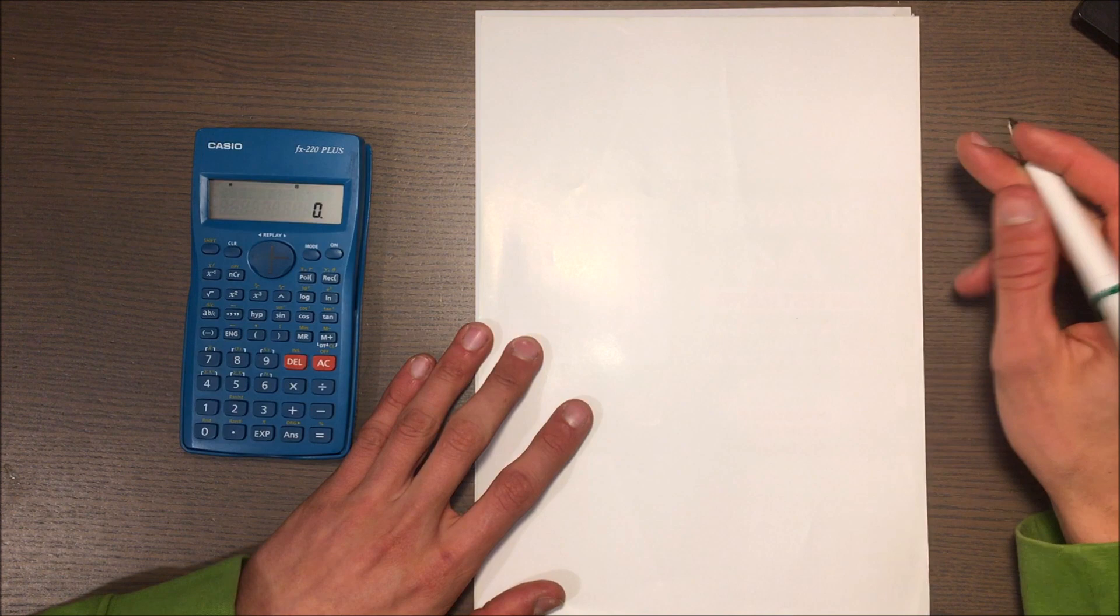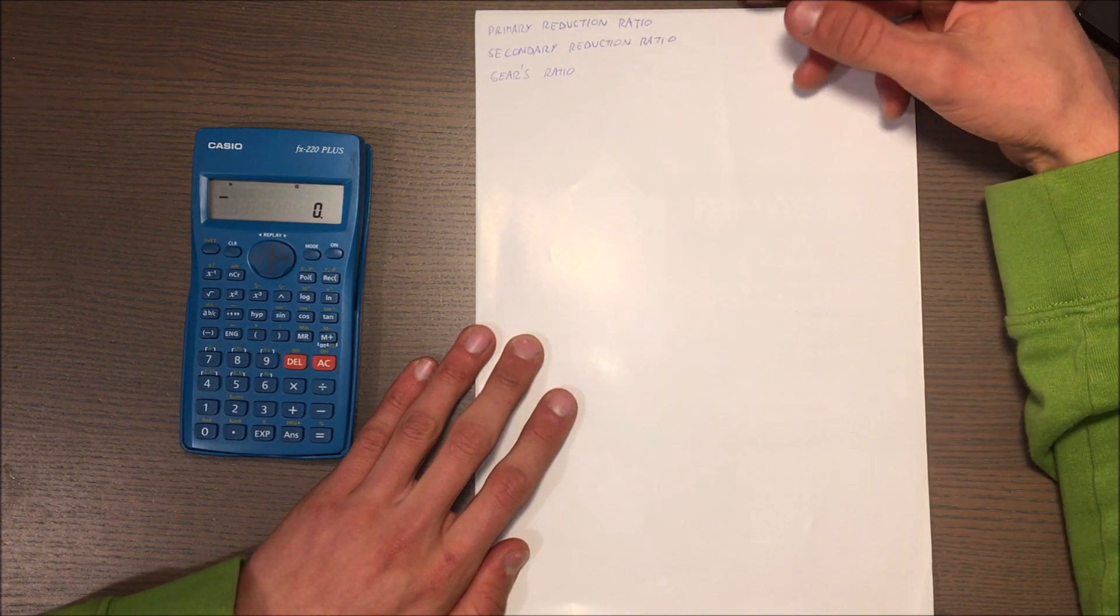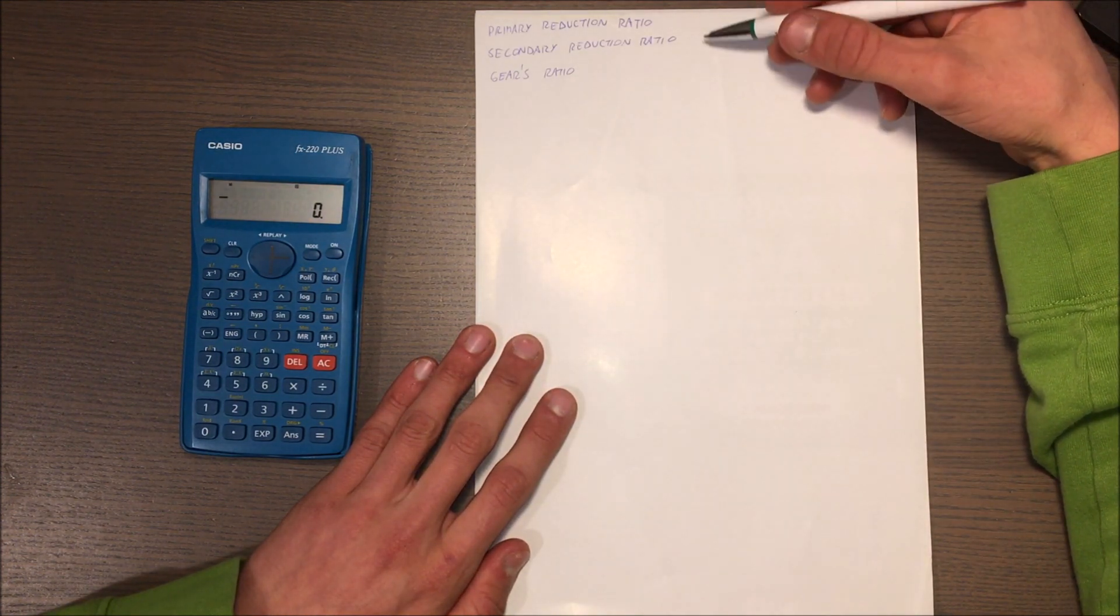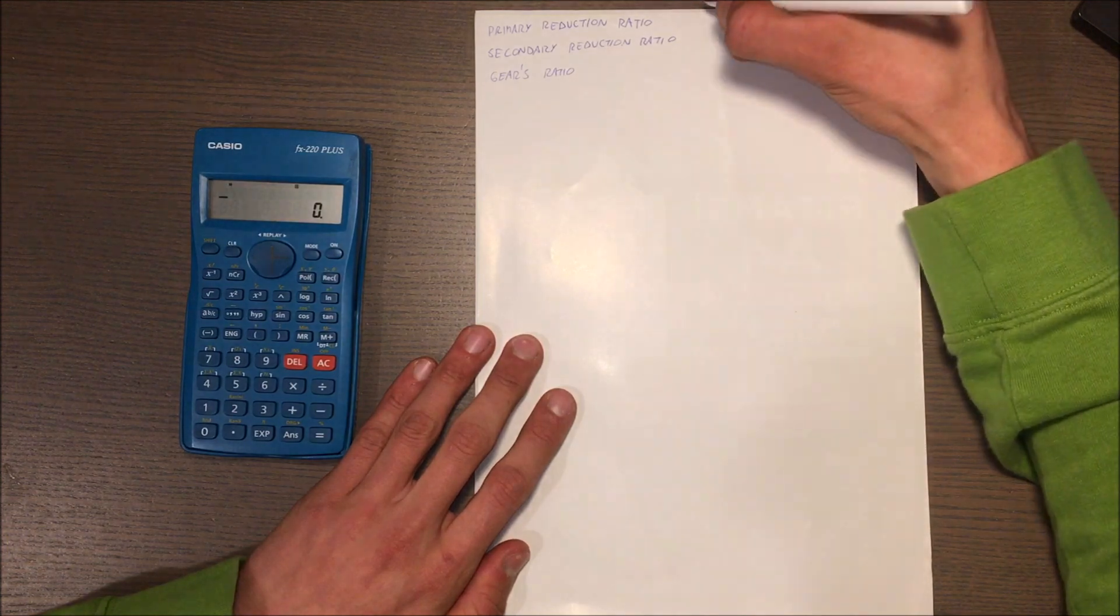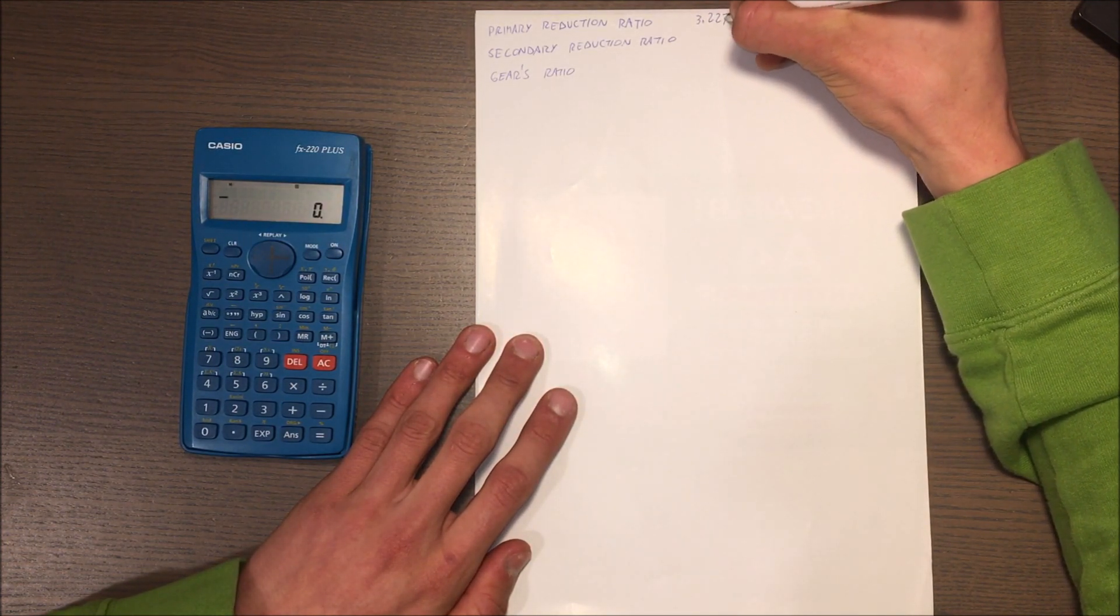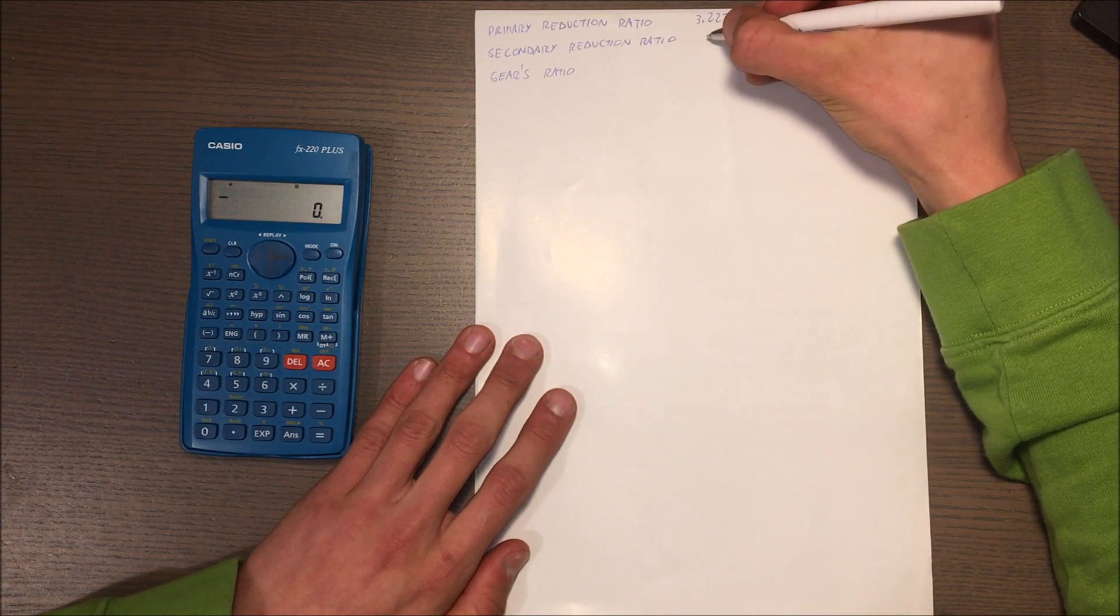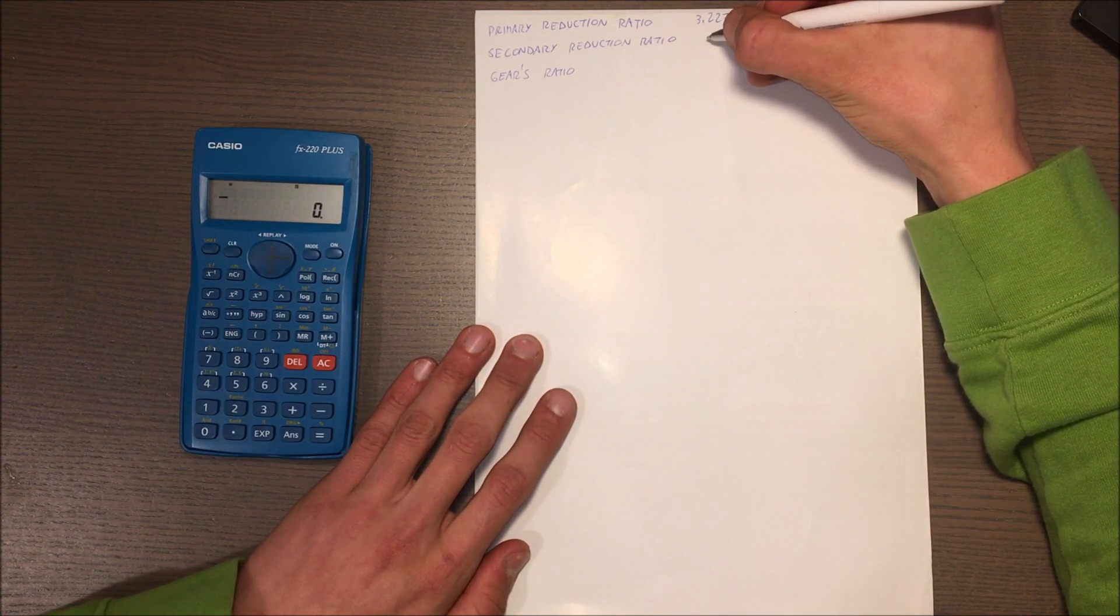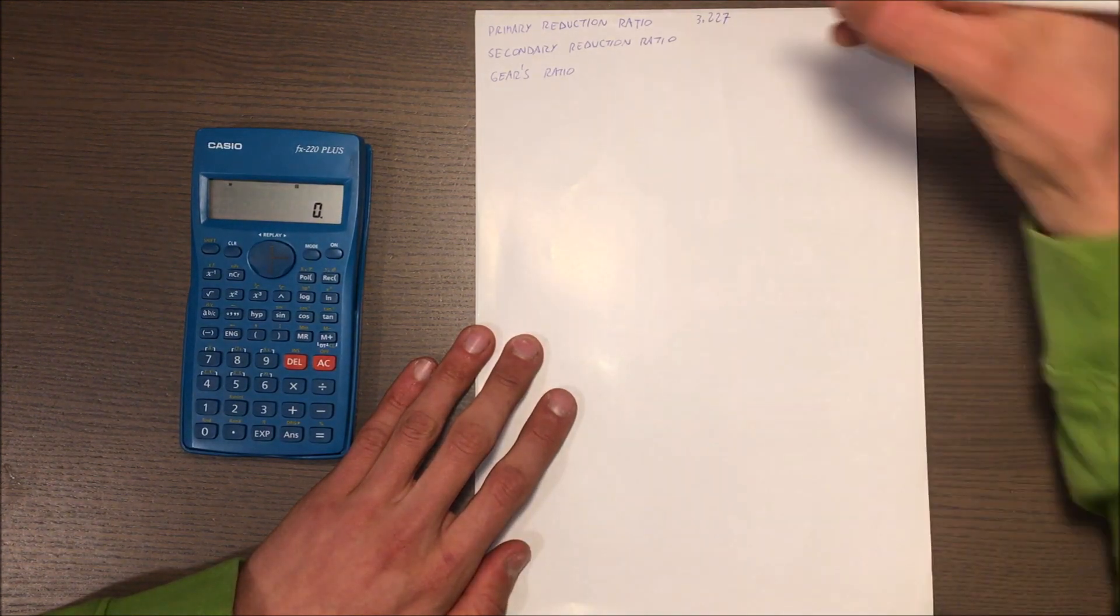These are the things you need to know to calculate your RPM. You can find these three things in your service manual. In my case the primary reduction is 3.227.